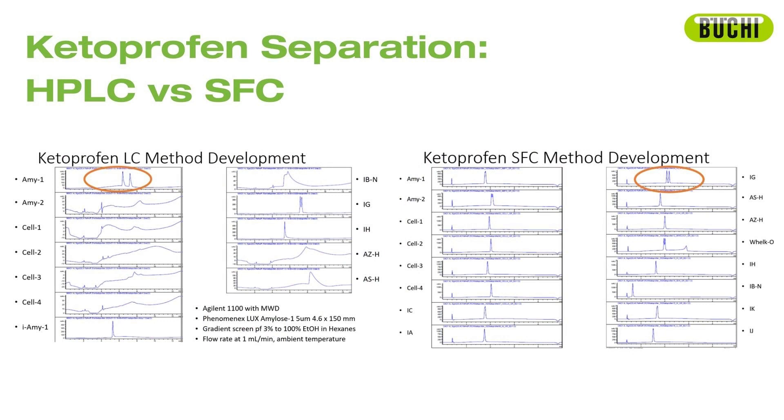How would I choose the best column based off my chemistry? Can you talk about how method development on the SFC would compare to method development on a normal phase preparative HPLC? One thing that stays the same between the two is that you have to screen a lot of different stationary phases to find the best one. Our expert colleague Ron Magbu scanned racemic ketoprofen with 12 columns on the HPLC and 16 columns on the SFC. The LC was run with the same mobile phase gradient, and amylose one proved to be the best stationary phase. For the SFC, all 16 columns were run under the same conditions and it showed that the IG column was best.